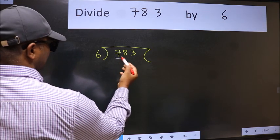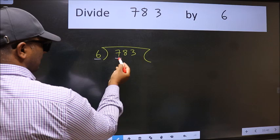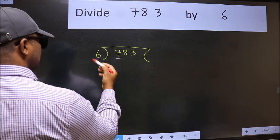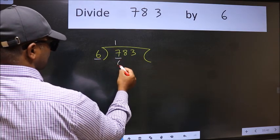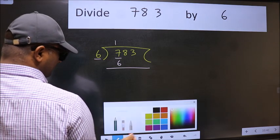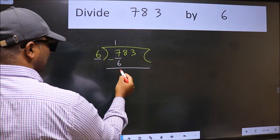Here we have 7 and here 6. A number close to 7 in 6 table is 6 times 1 is 6. Now we should subtract. We get 1.